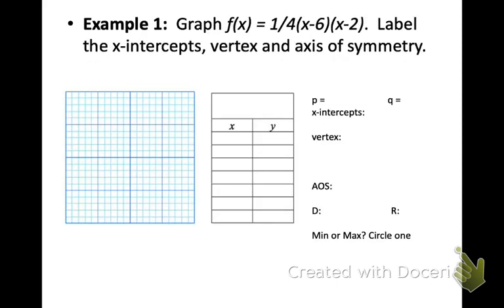So example one, we've got 1 fourth times x minus 6 times x minus 2. So notice how this quadratic, it has two x's, so therefore that would be x to the second power, but it's written a little differently. So we can pick out those p and q values. It's going to be opposite from the sign that you see. So p, the first value we see is positive 6, and q is positive 2. We can write those in as x-intercepts. So it is 6, 0, and 2, 0, because those would be points right on the x-axis.